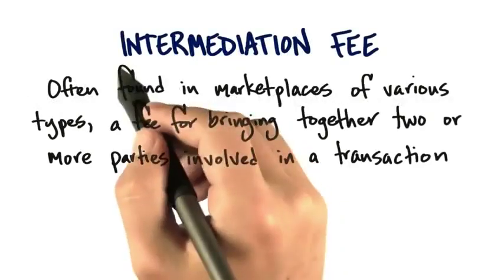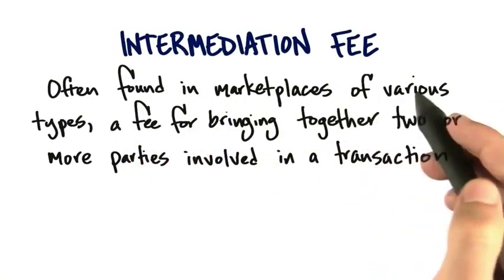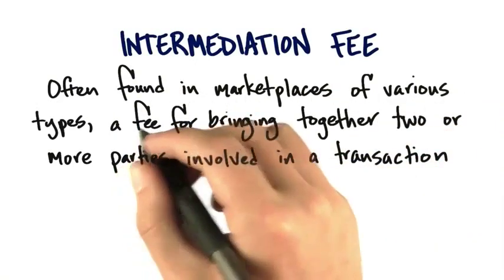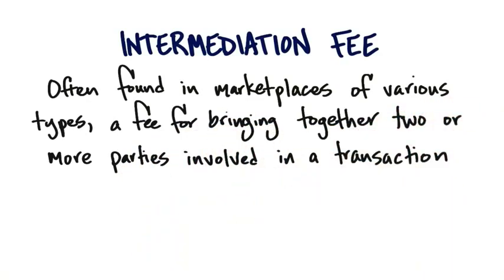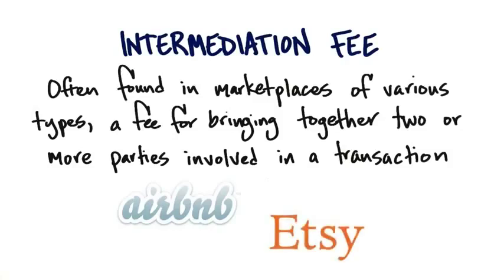Another type of revenue strategy could be an intermediation fee. Sometimes we find this in marketplaces — it's a fee for bringing two parties together involved in a transaction. The most popular example right now is Airbnb. They don't own all those places they're renting, but what they do is essentially a dating service between you and someone who wants to make money renting their apartment for a night or a couple of nights. Or Etsy, Cafe Press, E-Trade — all these are kind of brokers. And in the physical world, the classic is real estate brokers: they don't own the house, but they're a matchmaking service between you and the property you want to buy.